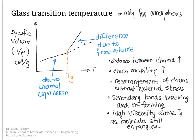When thinking about polymer mechanical properties, it's important to keep in mind the glass transition temperature, because it represents an upper limit and reference point for considering whether mechanical properties will be acceptable at a given temperature. Again, the glass transition temperature applies only to amorphous polymers.